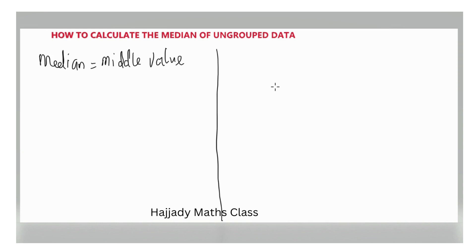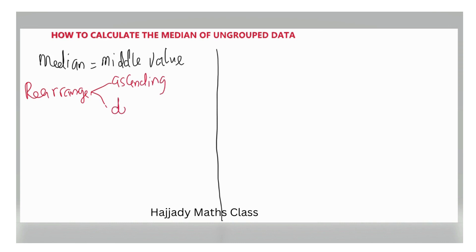There is a technique you really need to know. If you have to calculate the median of any number, there is a need to rearrange the data set given. The arranging of the data set can be done in two ways — it can either be in ascending order or in descending order.